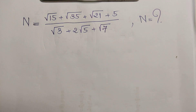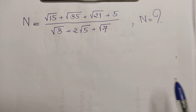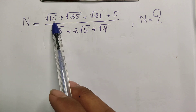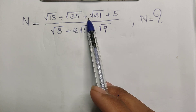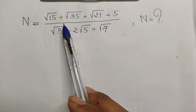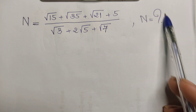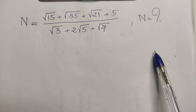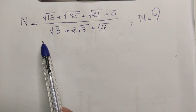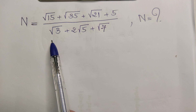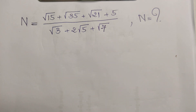Hello everyone, welcome to my YouTube channel. Today I have an exercise on paper where we have the expression n equals the square root of (15 + √35 + √21 + 5) divided by (√3 + 2√5 + √7), and we need to find the value of n. If you know how to solve this, please watch my video from beginning to end to verify your solution, and don't forget to subscribe to my channel for more exciting videos.